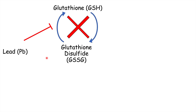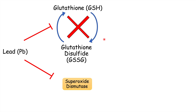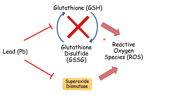Lead also leads to the inhibition of glutathione, which is important in neutralizing reactive oxygen species. Lead inhibits glutathione usage and also inhibits the enzyme superoxide dismutase. Both of these effects lead to increased levels of reactive oxygen species, or ROS, which can then cause cell membrane damage.